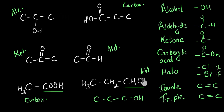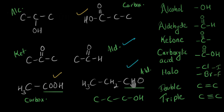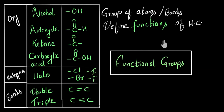Now one last question: out of all six molecules, which two will have similar chemical properties? Compounds which have the same functional groups have the same chemical properties. We can see that two molecules have a carboxylic acid functional group, so those two will have similar chemical properties. Similarly, two molecules are aldehydes, so those two will also have similar chemical properties. In this video, we spoke about functional groups — which are basically groups of atoms or bonds which define the functions of hydrocarbons — and we also looked at many functional groups and their names.